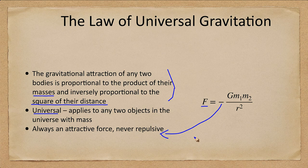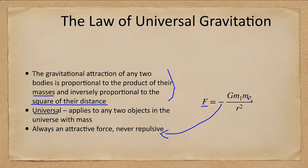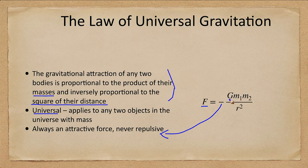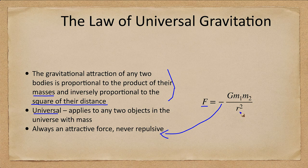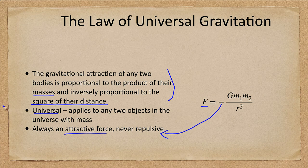The negative sign is because it is always an attractive force pulling things together. We will always get a negative value here because G is positive, masses cannot be negative, and the radius squared, the distance, cannot be negative. So it is always an attractive force. Gravity never pushes things away.